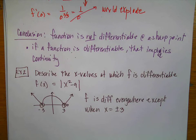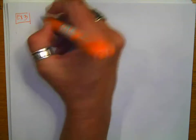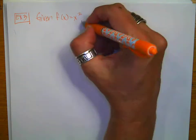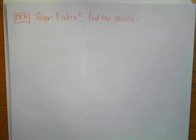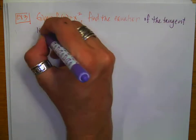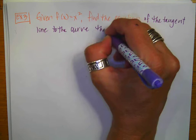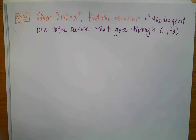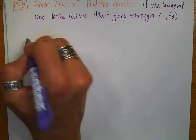Always make sure you answer the specific question that's asked. For example three, given f of x equals x squared, we want to find the equation of the tangent line to the curve that passes through the point (1, negative 3). We're going to do this with the limit definition of a derivative for extra practice. Looking at the graph — here's the parabola, and the point (1, negative 3) is down here — we want the tangent line to the curve.